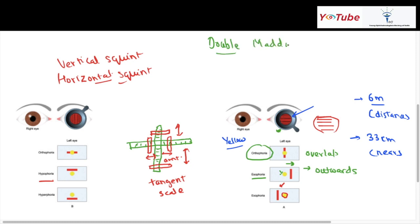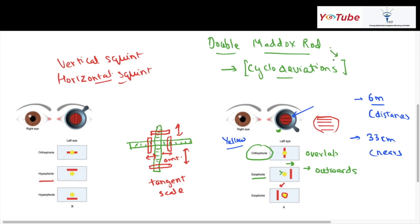Sometimes there is a question about the double Maddox rod test. In this test, the Maddox rod lens is placed in front of both eyes. It is used to measure cyclodeviation — for example in superior oblique or inferior oblique palsy — where there can be both a horizontal and a vertical component to the deviation. The double Maddox rod test is the key tool for measuring cyclodeviation. These are the important points regarding the Maddox rod and Maddox tangent scale.